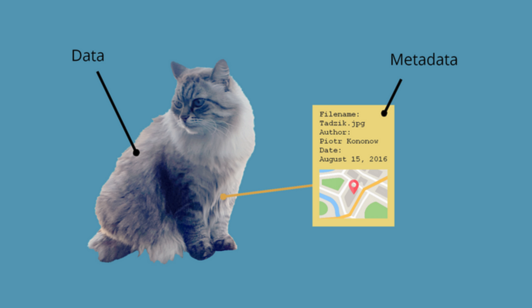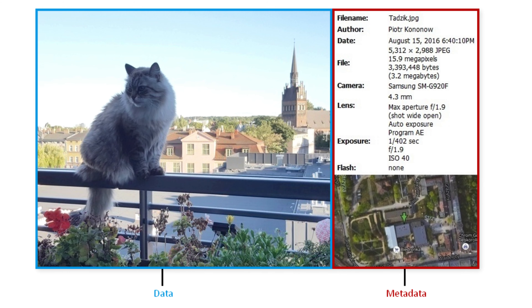Metadata is information embedded in a file that can include details about the copyright owner, date of creation, and location. Ensuring your metadata is accurate and up-to-date can help prove ownership in situations of conflict, and helps in protecting your images and videos from being used for deepfakes.